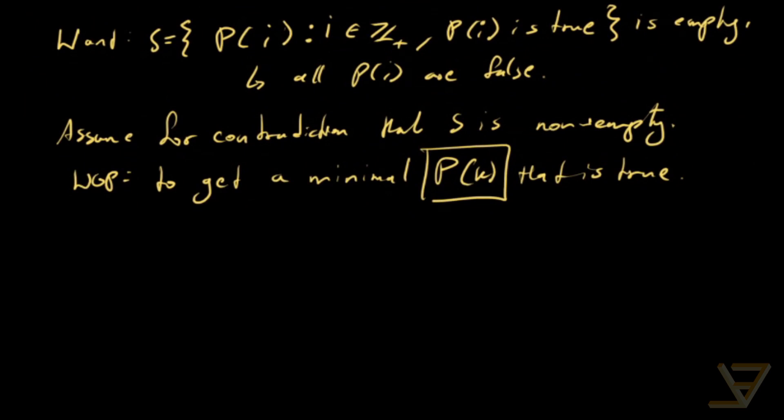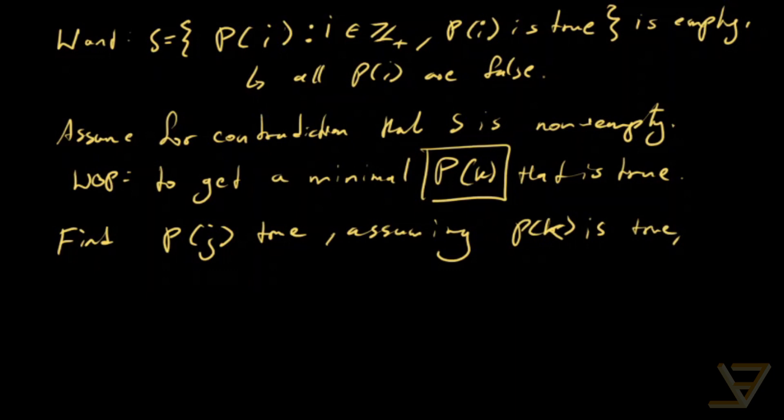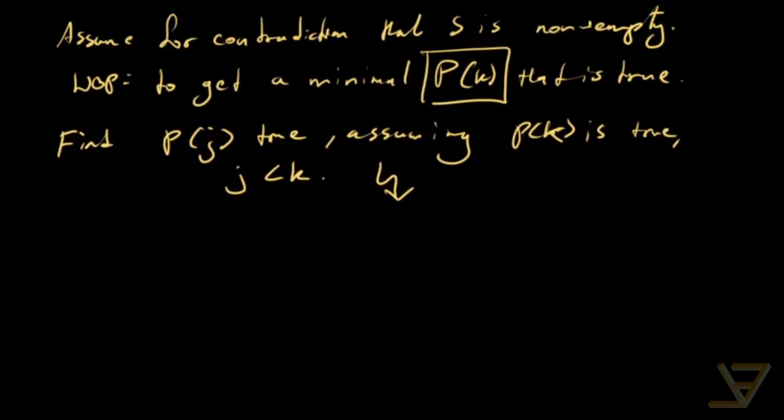So what happens then in this technique is that if we can do it, we have to find P_j true, assuming P_k is true, and j is less than k. And that contradicts the minimality of k. So that's what we're going to do. And I think that's enough general theory. I'll give you a concrete example now.